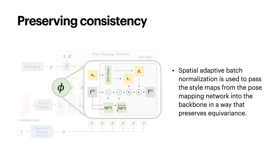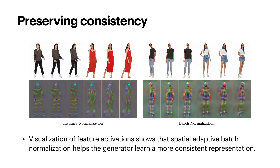Another important design is the Spatial Adaptive Batch Normalization (SABN). It is used to pass the style maps rendered by the 3D pose mapping network into the 2D CNN backbone. First, a per-channel normalization on the backbone's feature maps is performed. Then, the feature maps are denormalized with mean and variance values calculated from the mini-batch statistics of the style maps. Visualization of internal representations shows that SABN helps the generator learn a more consistent representation, compared to the instance normalization used in other works.